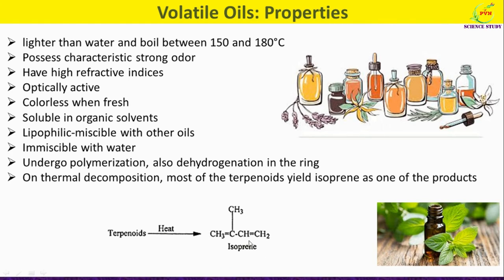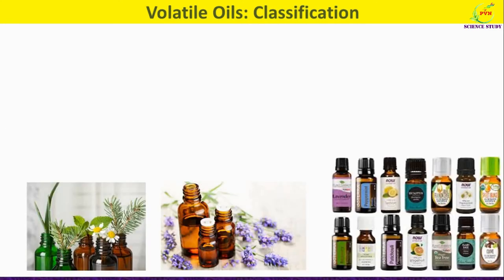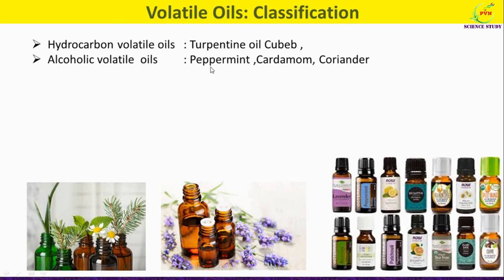With this we have completed properties of volatile oils. Now we will see the classification of volatile oils. Volatile oils are classified in different ways. According to one classification, they can be classified as hydrocarbon volatile oils — common examples are turpentine oil and cubeb.